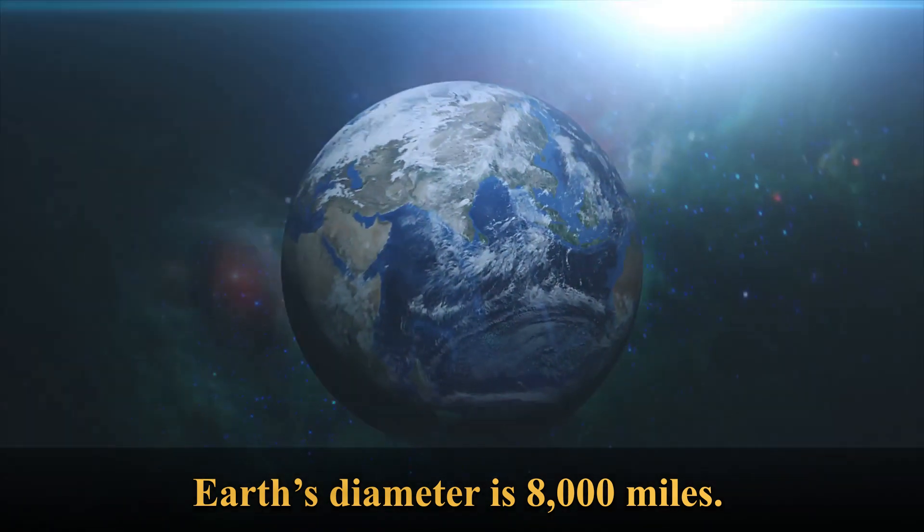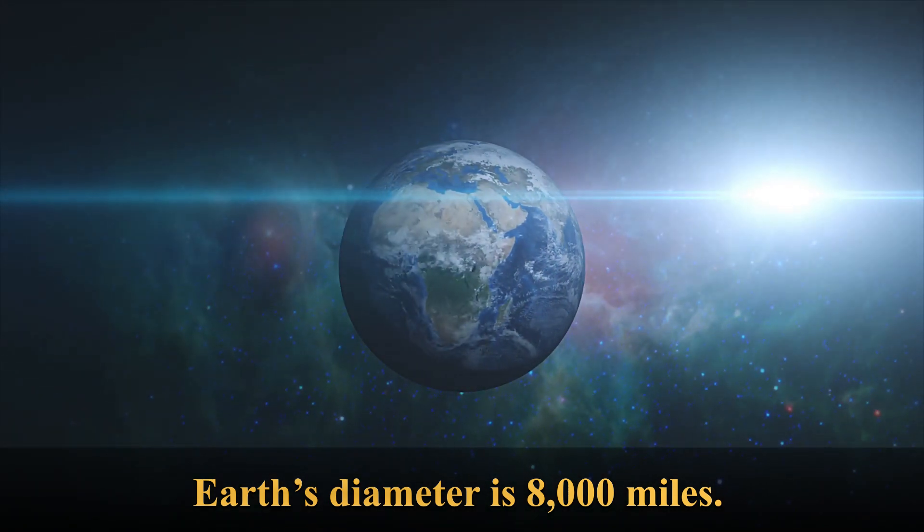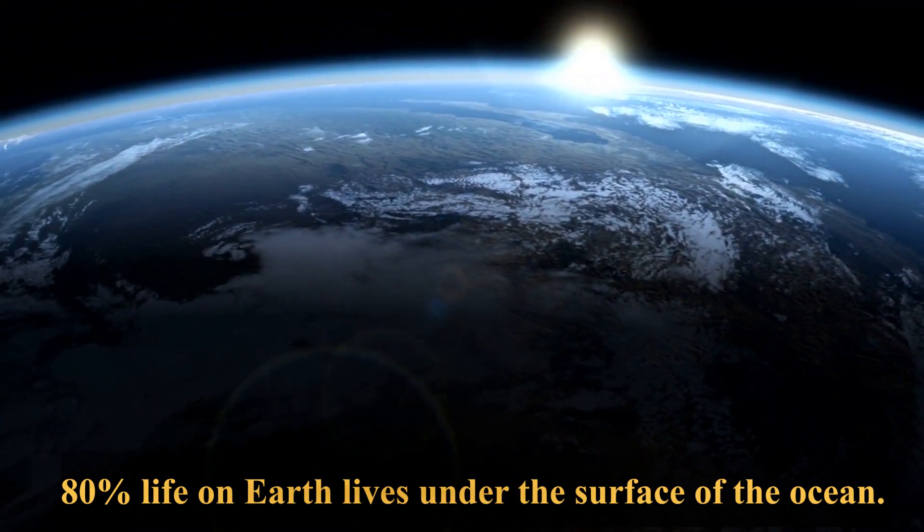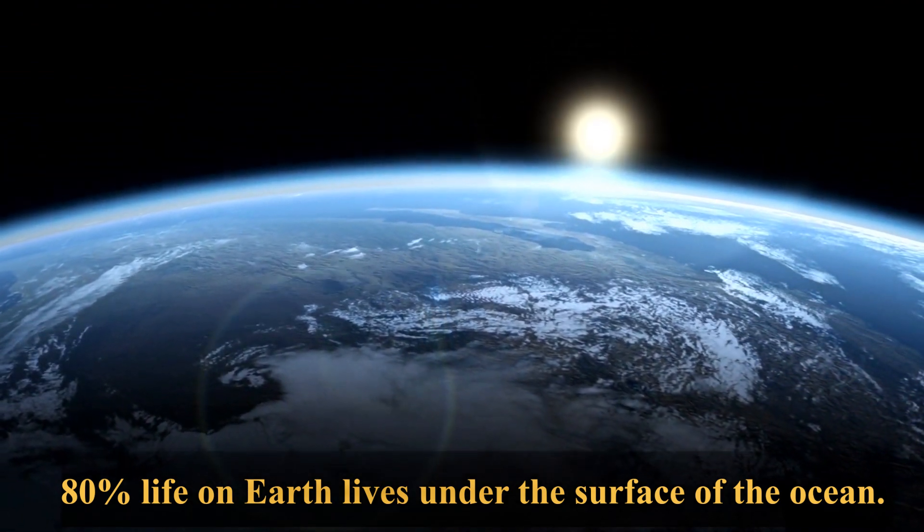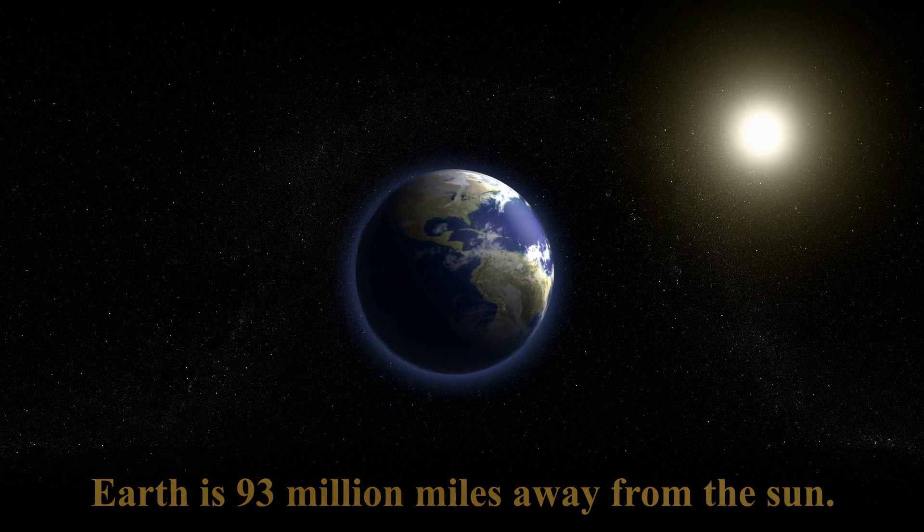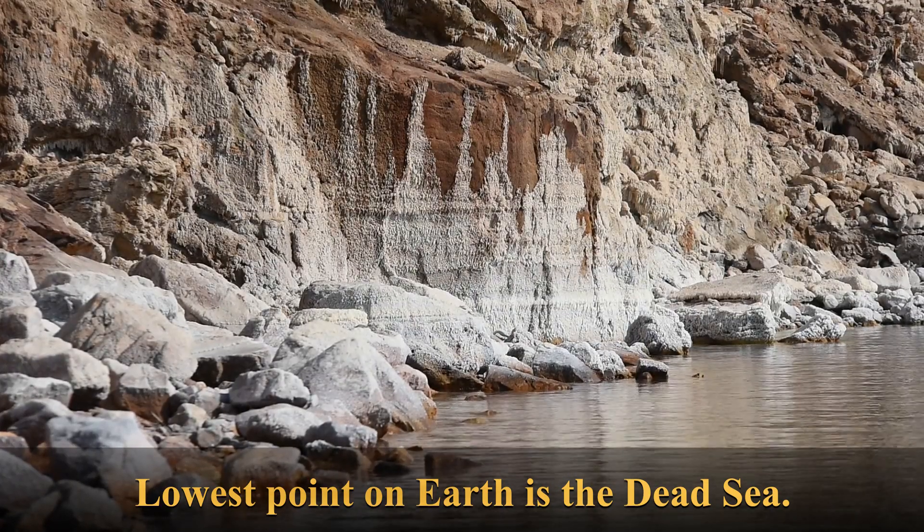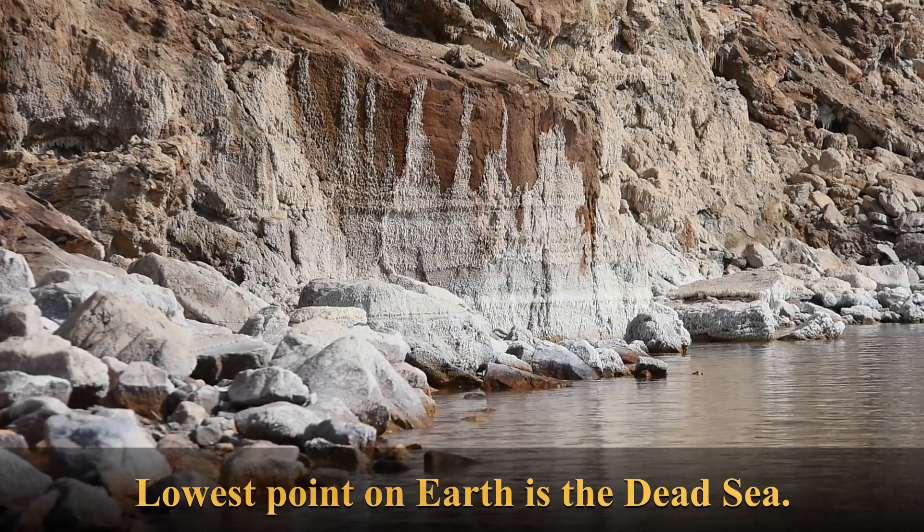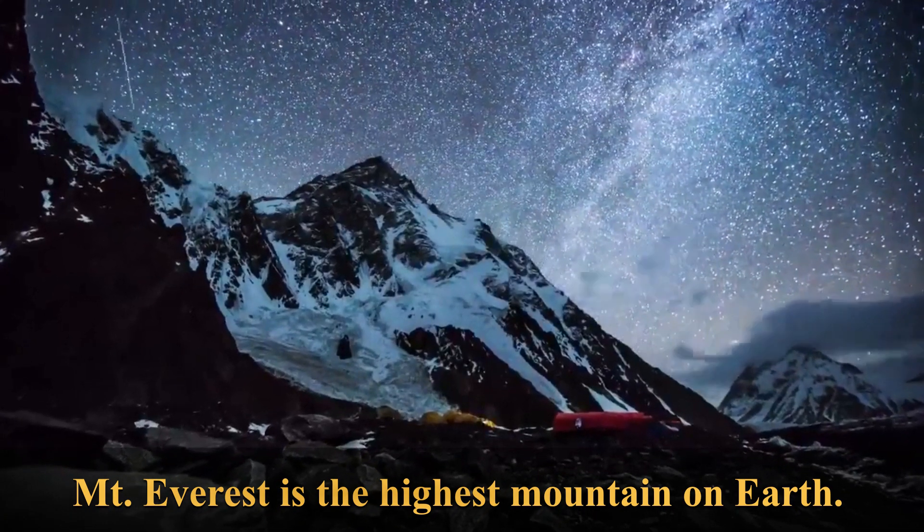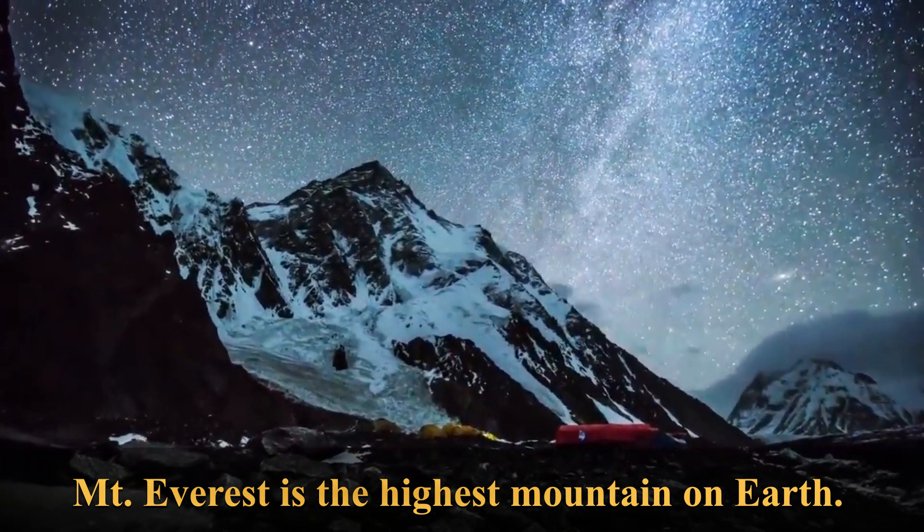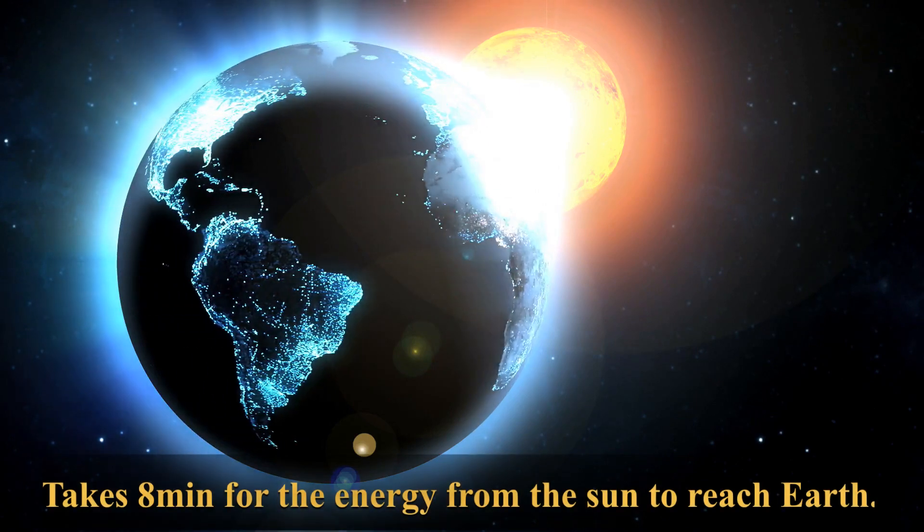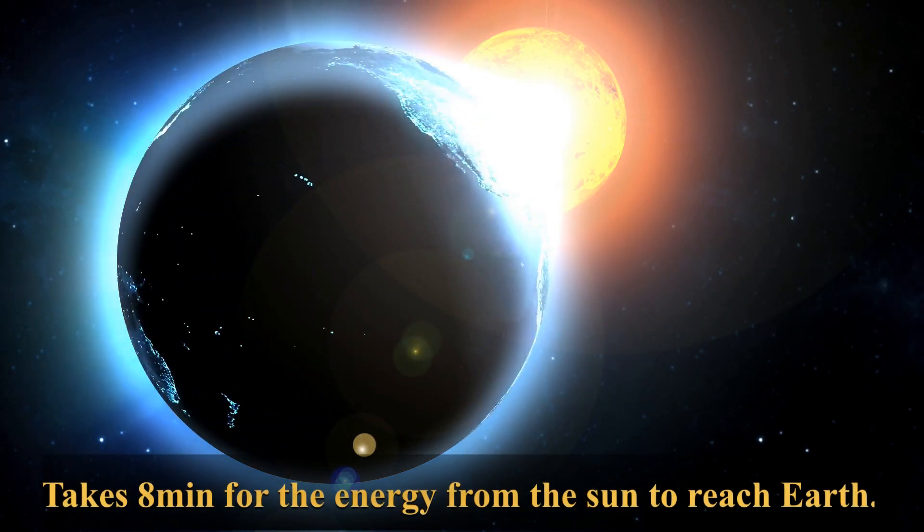10. Earth's diameter is 8,000 miles. 11. 80% of all life on Earth lives under the surface of the ocean. 12. Earth is 93 million miles away from the Sun. 13. The lowest point on Earth is the Dead Sea measuring 1,302 feet below sea level. 14. Mount Everest is the highest mountain on Earth. Its peak measures 29,029 feet above sea level. 15. It takes 8 minutes for the energy from the Sun to reach Earth.